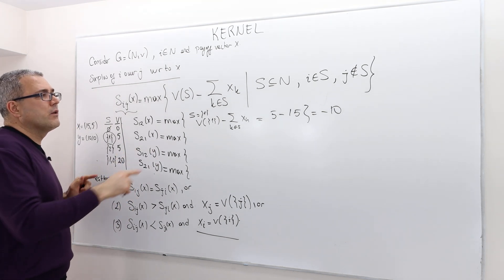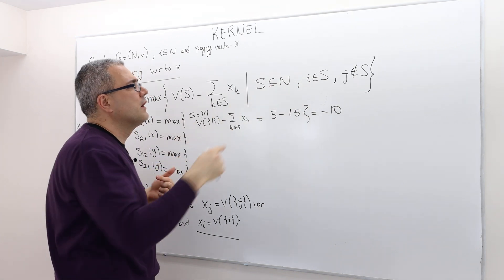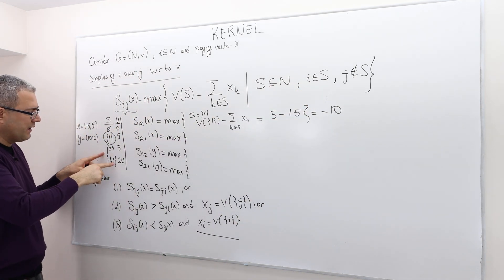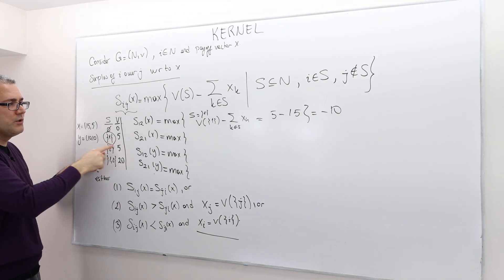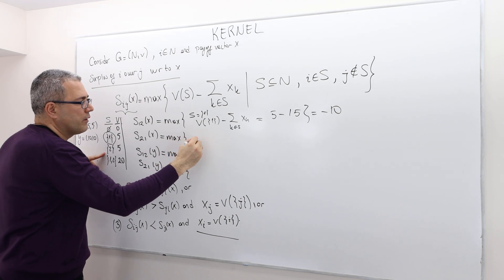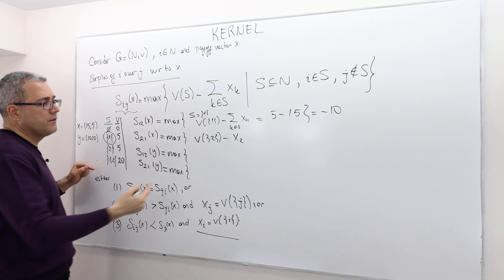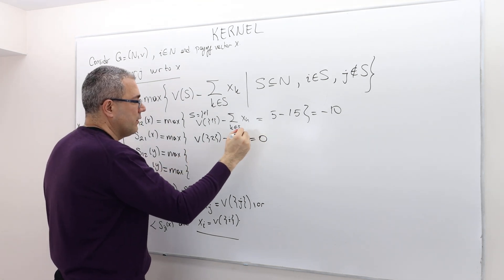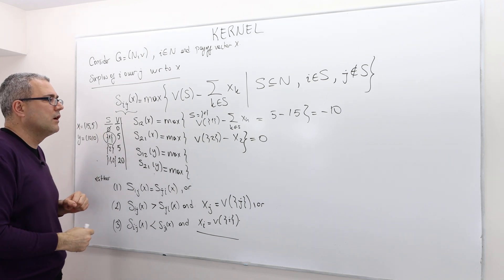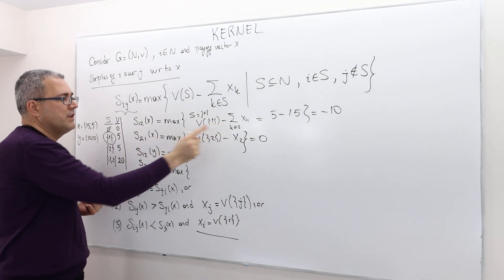What about s_21? Coalitions where player two is in but one is not — there's only one such coalition: {2}. The value of this coalition minus x_2 is five minus five, which equals zero. So s_12(x) is minus 10 and s_21(x) is zero.